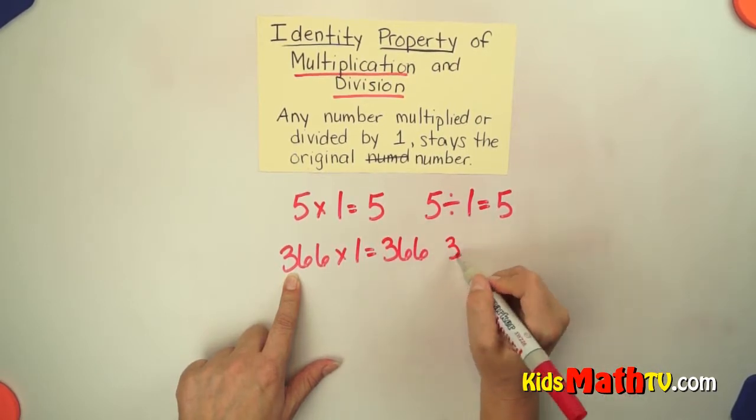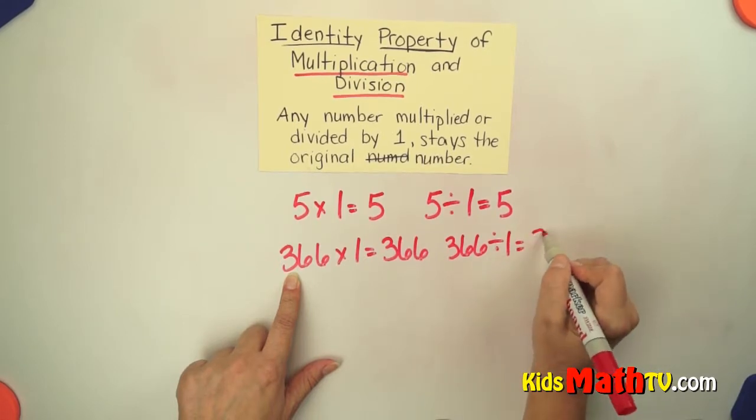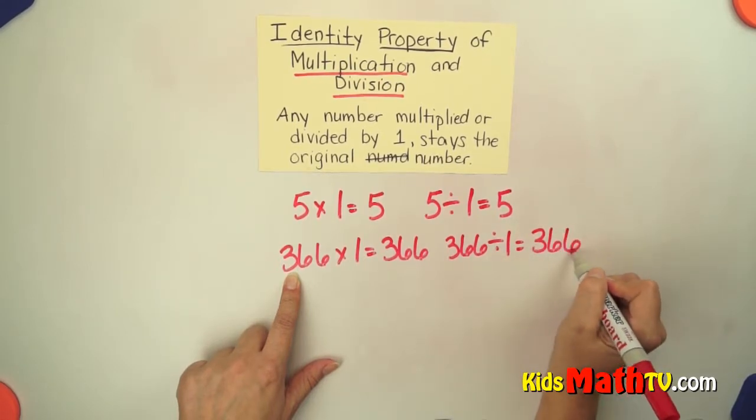Same with division. 366 divided by one equals 366.